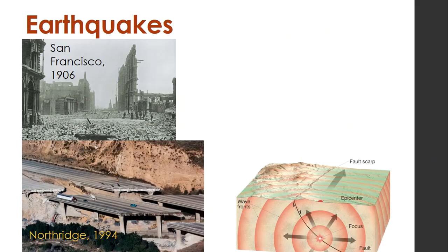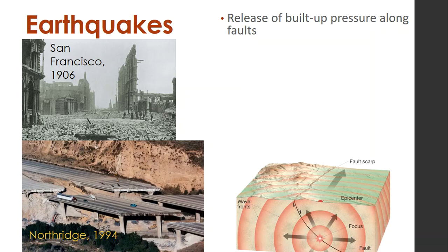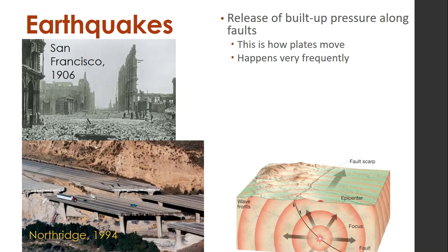Next, we're going to talk about earthquakes and tsunamis, which is the last thing we'll cover in this chapter. Earthquakes are a release of built-up pressure along faults. In Southern California we're familiar with earthquakes — you can see pictures of the 1906 San Francisco earthquake and the 1994 Northridge earthquake. Plates are moving, pressure builds up, and eventually those plates have to move very quickly. I'll give you a link to a USGS website — earthquakes happen all the time that we just don't feel because they're relatively small.